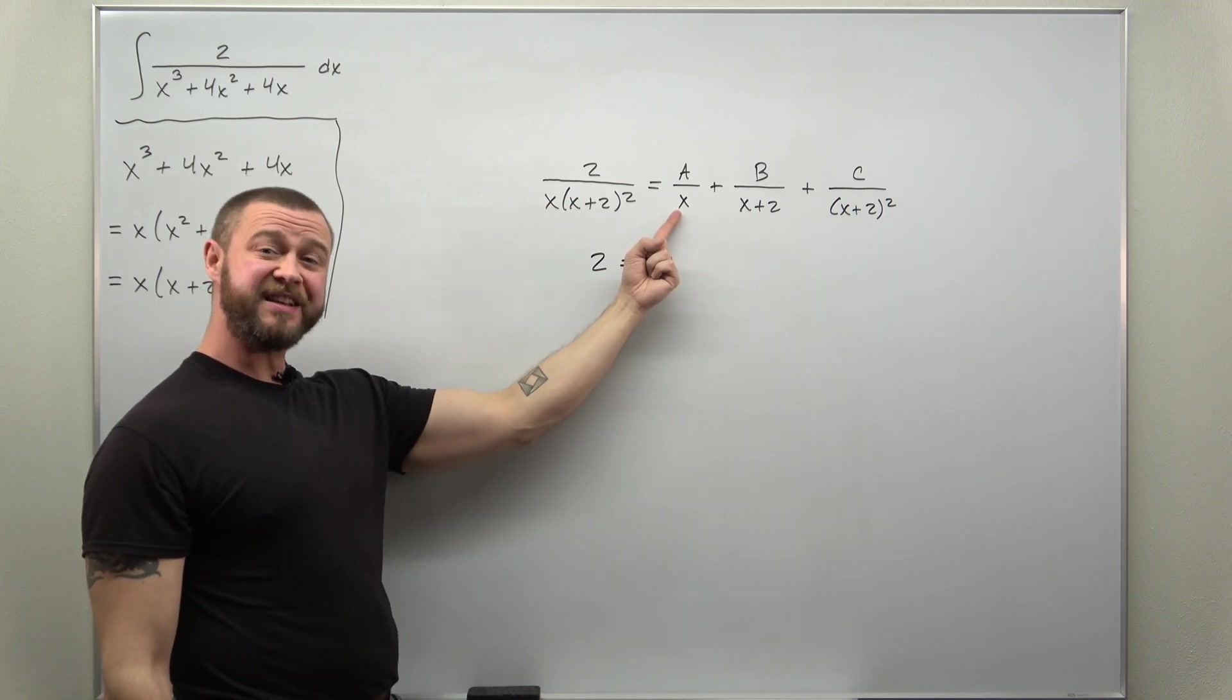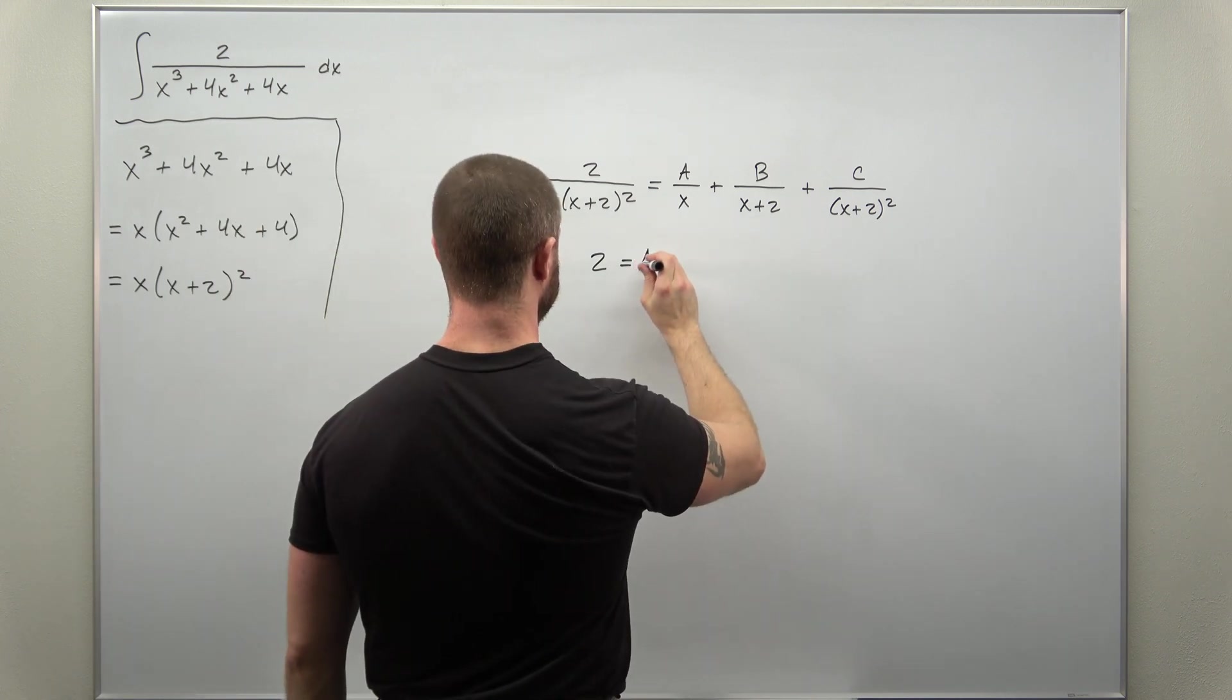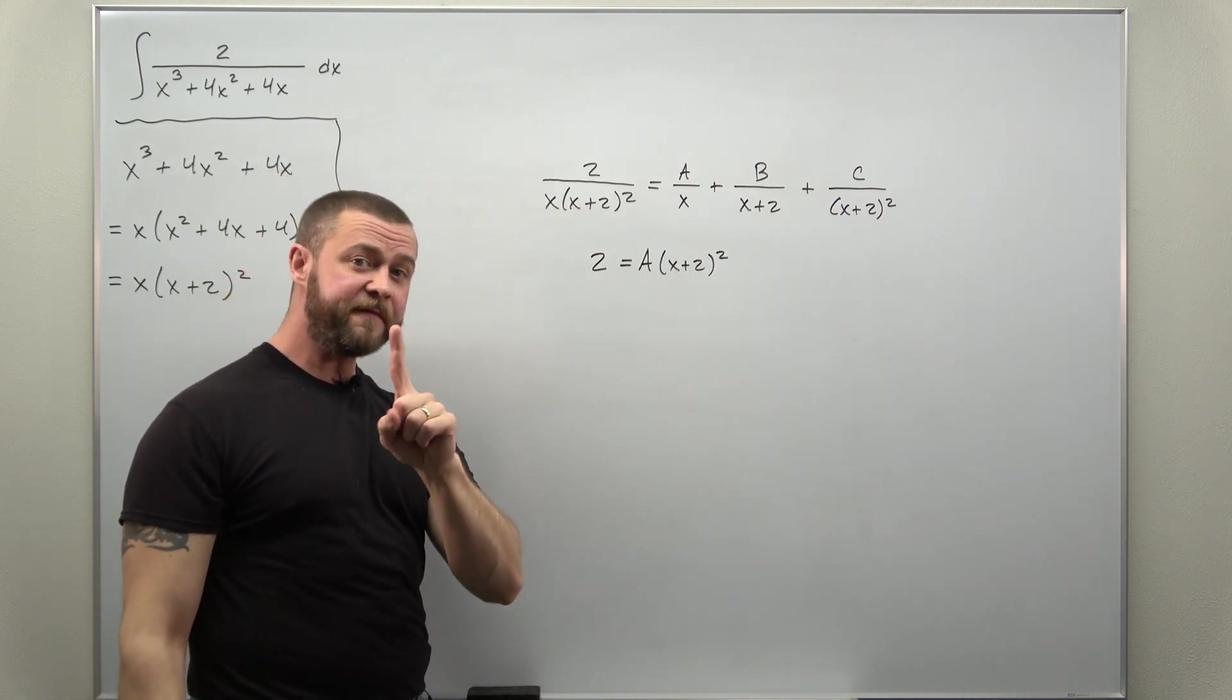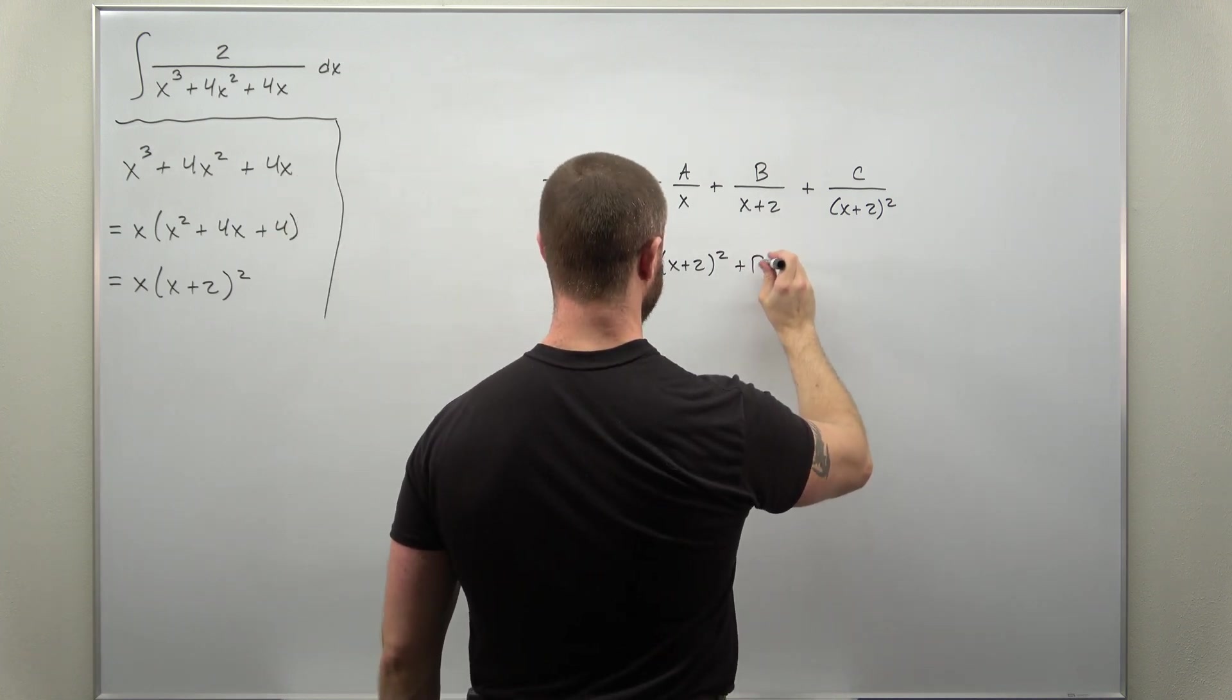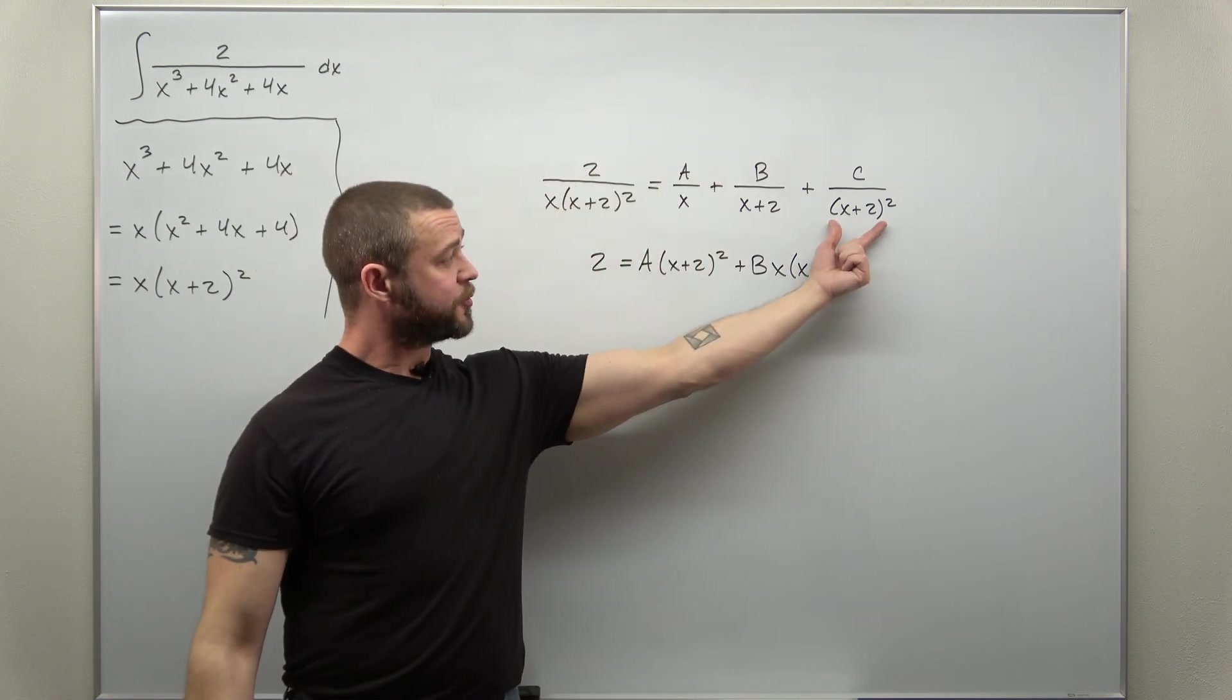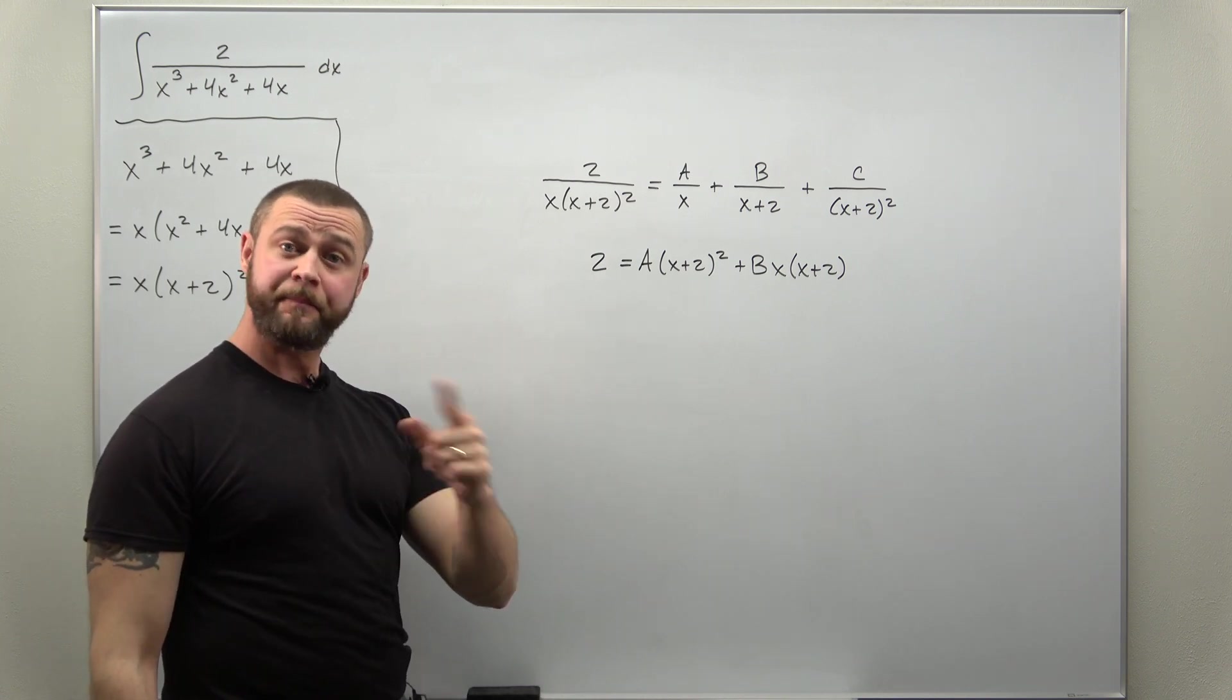When you multiply that LCD to the first partial fraction x cancels leaving you with a times x plus 2 squared. Your next partial fraction one factor of x plus 2 cancels leaving you with b x times x plus 2. And now your third partial fraction the factor x plus 2 squared cancels completely leaving you with c times x.